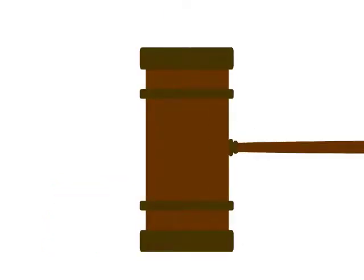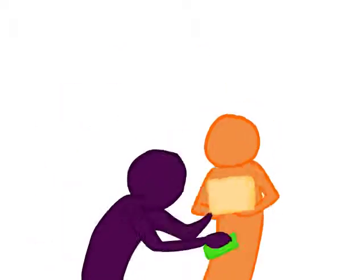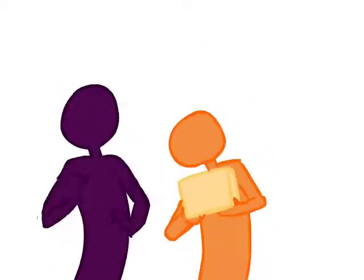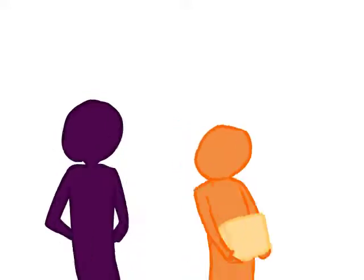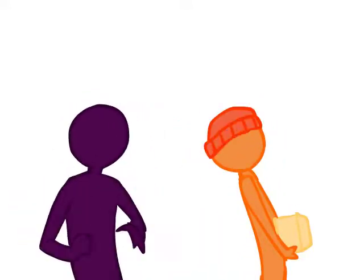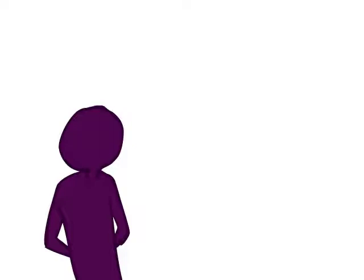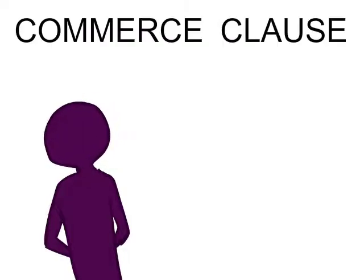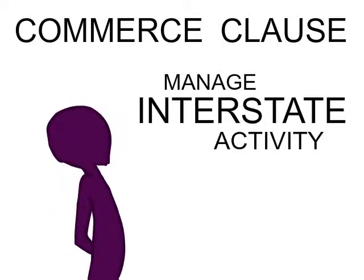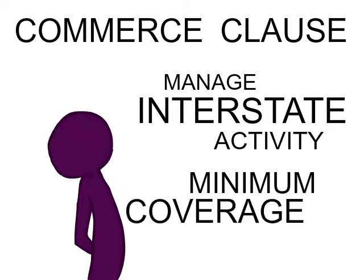It is this part of the law that is expected to be targeted from the Supreme Court. Can the federal government force you to purchase something? There are many valid concerns here. Republicans think that this bill took too large a step in the interactions government has in our lives. They don't think that the Commerce Clause, which allows the government to manage interstate activity, provides for the measures of this minimum coverage requirement.